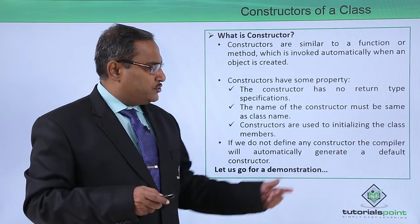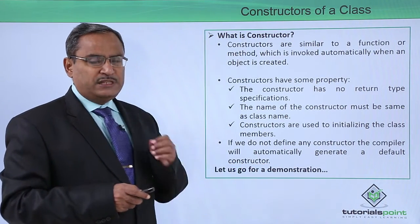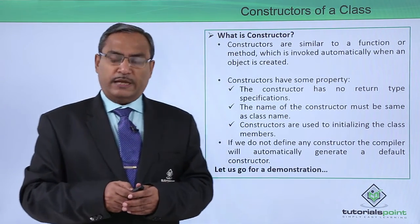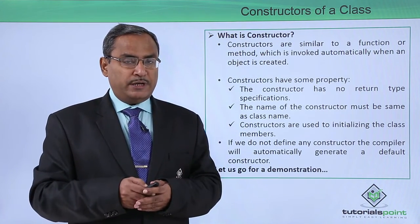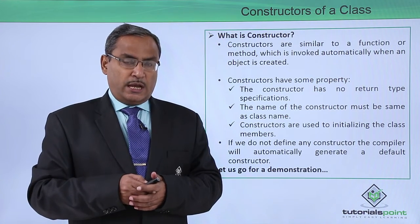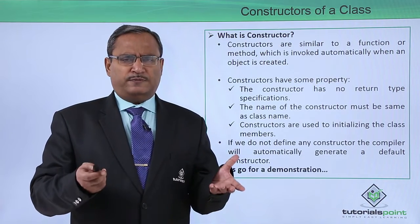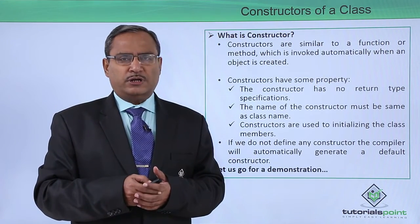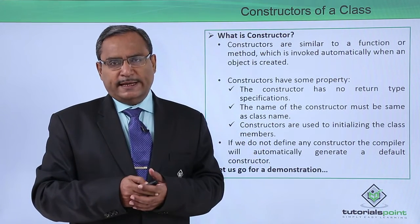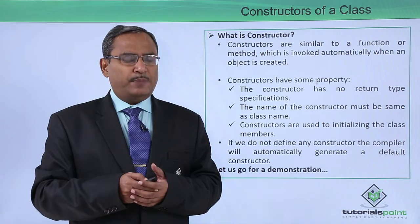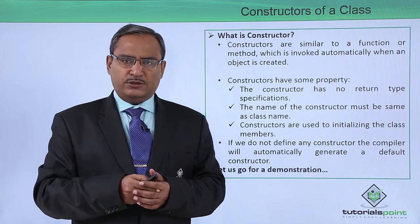If we do not define any constructor, the compiler will automatically generate a default constructor — a non-parameterized default constructor. A constructor should have public scope, but sometimes for special purposes it might be kept under private scope. For example, in the singleton design pattern the constructor is defined in private scope, but that is a special case; we always define our constructor under public scope.